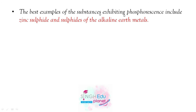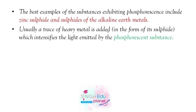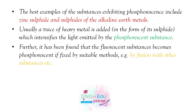The best example is zinc sulfide and sulfides of alkaline earth metals. Heavy metals added to the substance intensify the light emitted by the phosphorescent substance, increasing its intensity. Fluorescent substances can also become phosphorescent when certain methods are applied, like fusion.